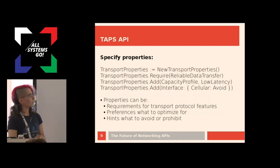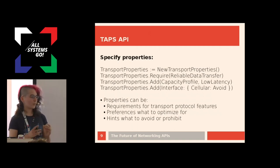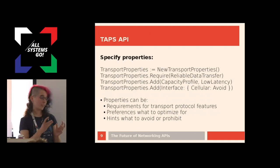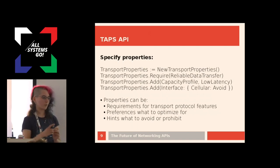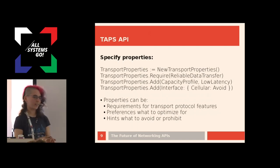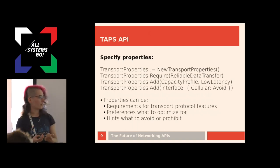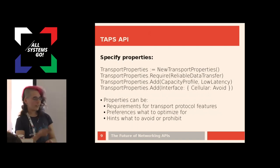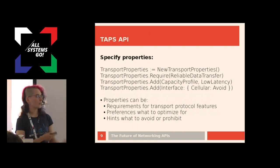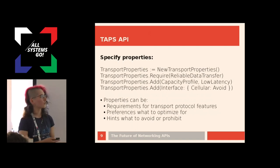Transport properties are fun, because those are the transport features I mentioned earlier. Do I want reliable data transfer? Do I want to configure checksums? In UDP-Lite, you can configure whether you want the checksum to cover all the packet or just part of it. There are very specific features that some transport protocols have. If you are interested in those details, you can find them in the draft. The application can require some reliable data transfer — that is a 'require'. It could also say I have a preference for a specific kind of feature, or I want to avoid a protocol that has a specific feature, or even prohibit it.